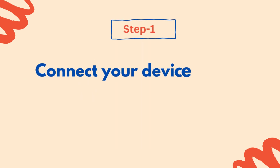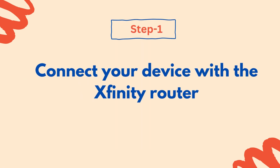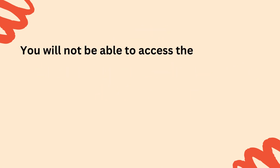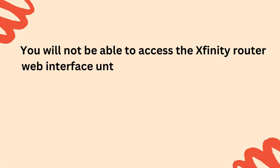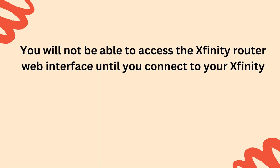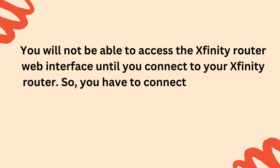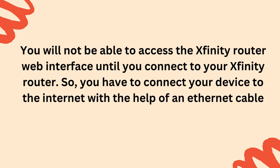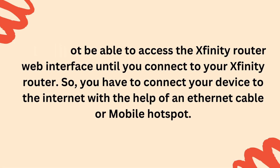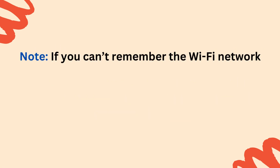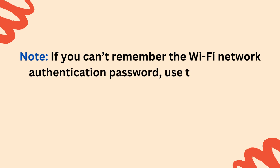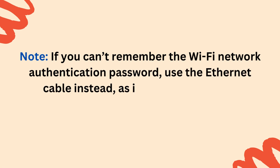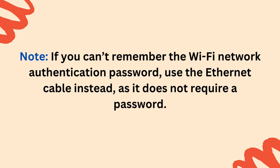Step 1: Connect your device with the Xfinity router. You will not be able to access the Xfinity router web interface until you connect to your Xfinity router. You have to connect your device to the internet with the help of an Ethernet cable or mobile hotspot. If you can't remember the Wi-Fi network authentication password, use the Ethernet cable instead, as it does not require a password.